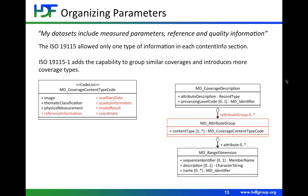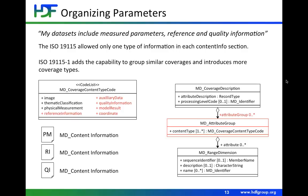We also have model results — there are a lot of situations where people have models and we want to document them well. In the past you would need multiple content information sections — one for physical measurement, one for reference information, one for quality information. Now we can bring all of those together and create a more compact, modular content information piece that has multiple coverages or multiple parameters in it.